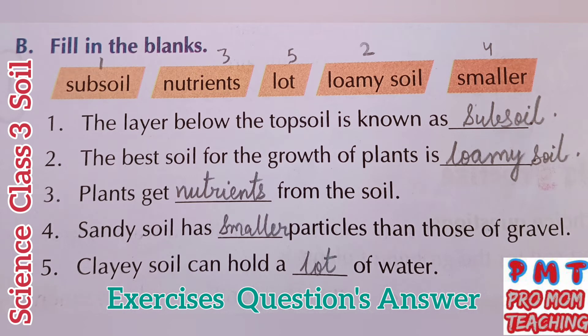Fill in the blanks. First: the layer below the topsoil is known as subsoil. Second: the best soil for the growth of plants is loamy soil. Third: plants get nutrients from the soil. Fourth: sandy soil has smaller particles than those of gravel. Fifth: clayey soil can hold a lot of water.